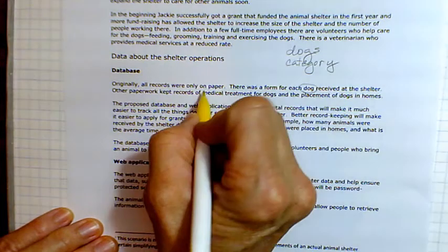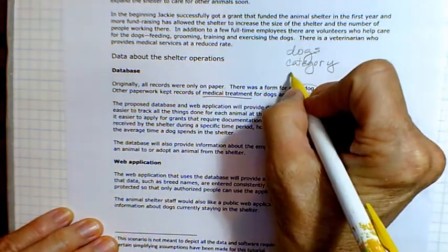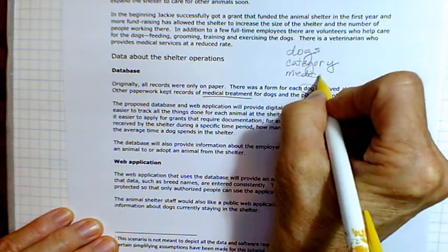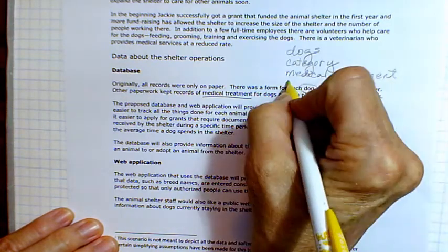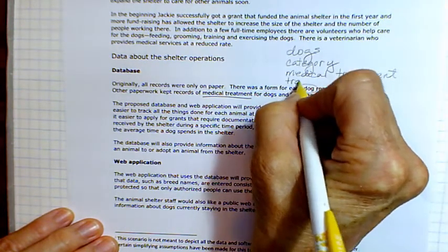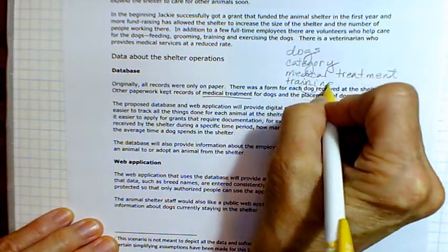There are medical treatments, things that happen to the dog. But there might also be training or grooming, so things that happen.